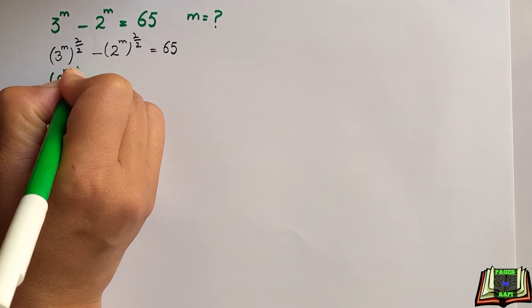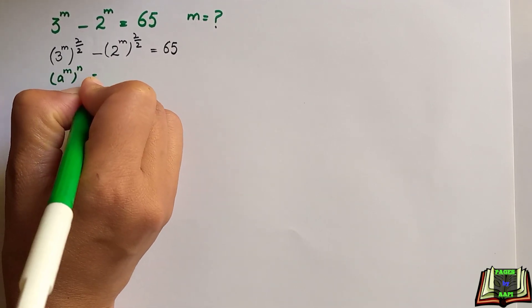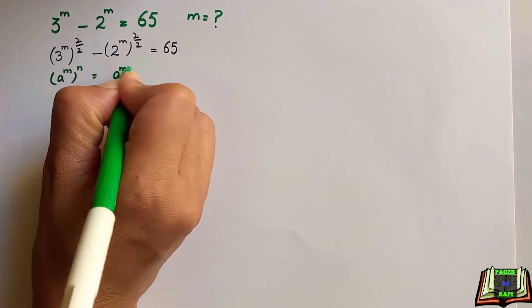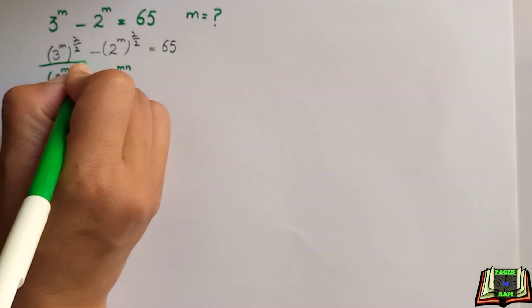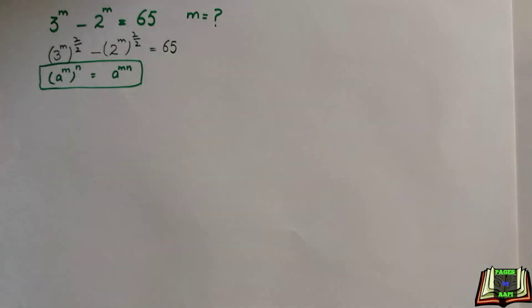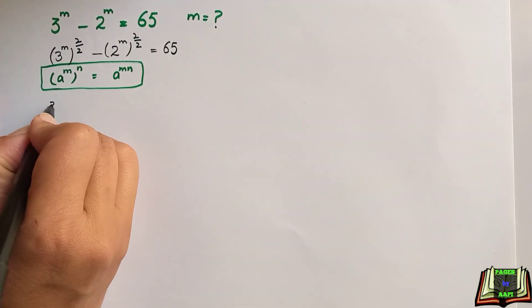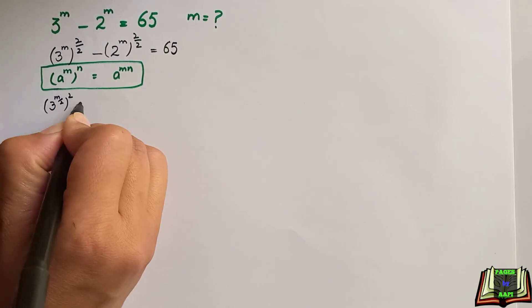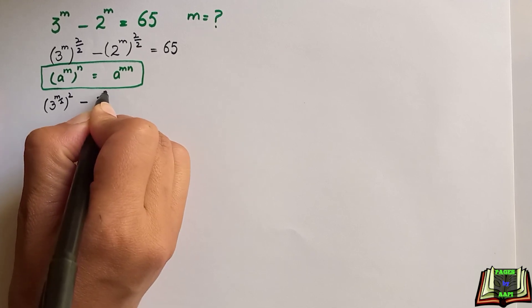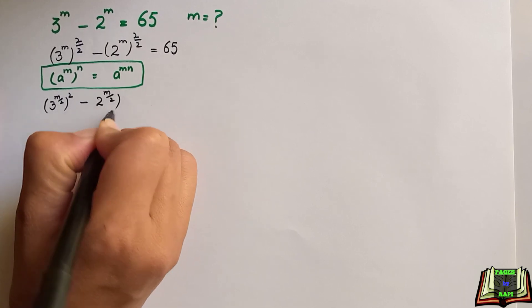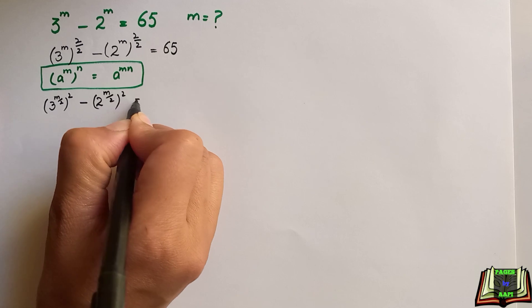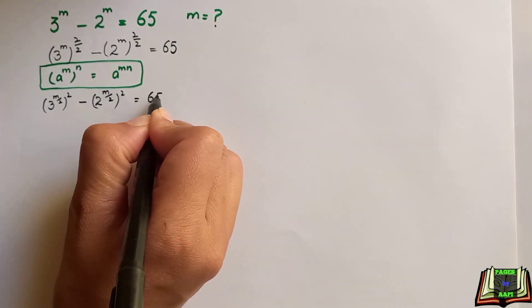In the next step we are going to use the formula: a to the power m, to the power n equals a to the power m times n — the powers are multiplied. Applying this gives us 3 to the power m/2, squared, minus 2 to the power m/2, squared, is equal to 65.